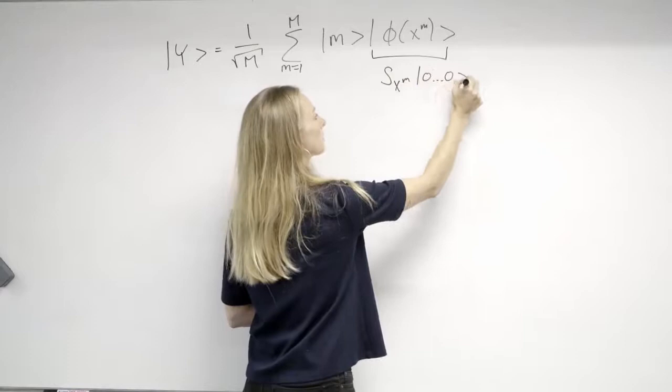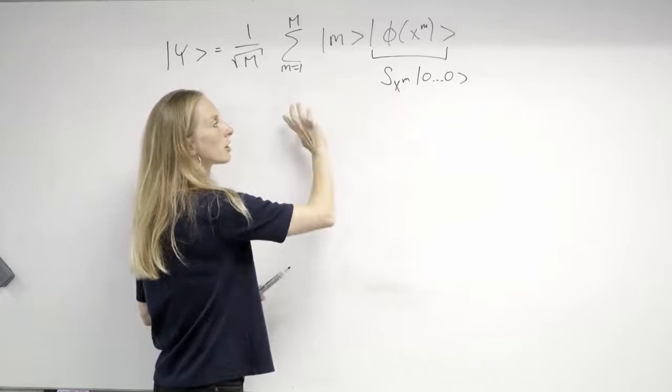But now, before we have done it conditioned on an ancilla, but now we do it conditioned on a whole index register. So this can be a register of a couple of qubits.